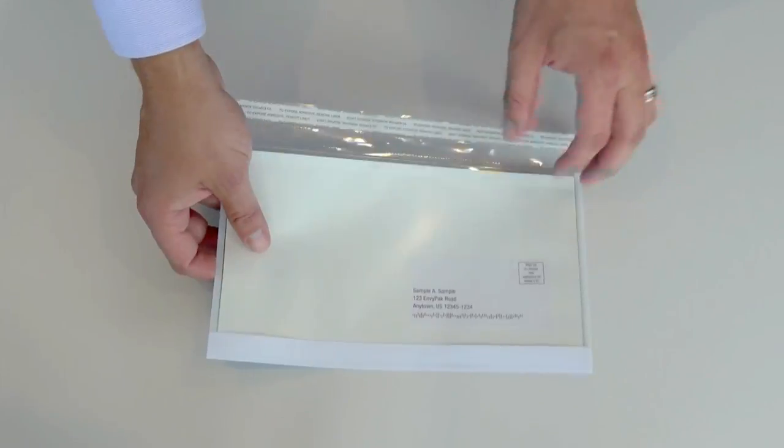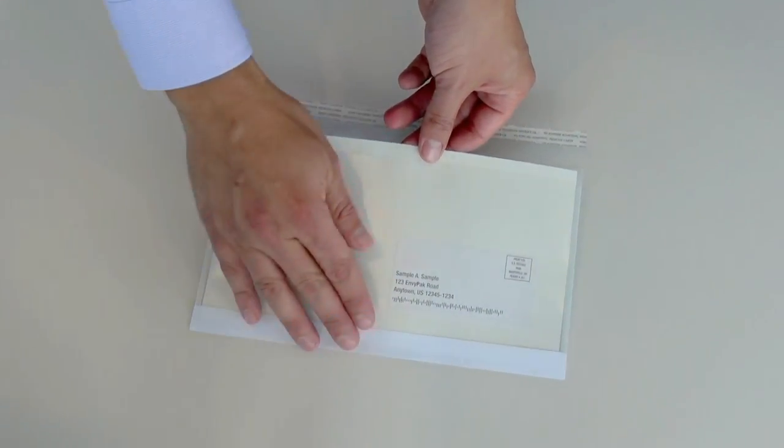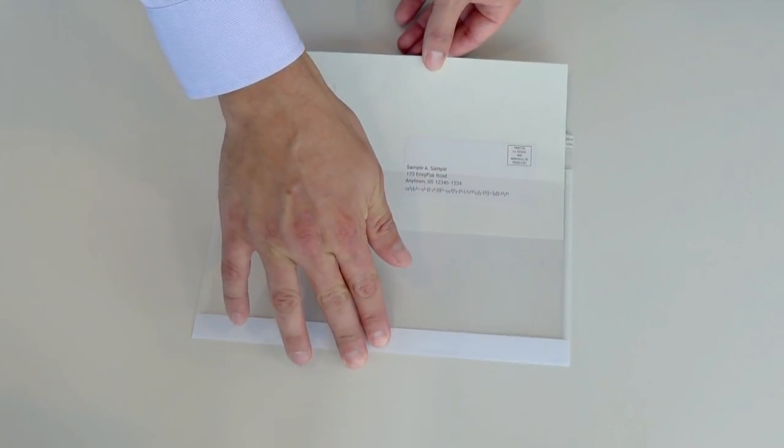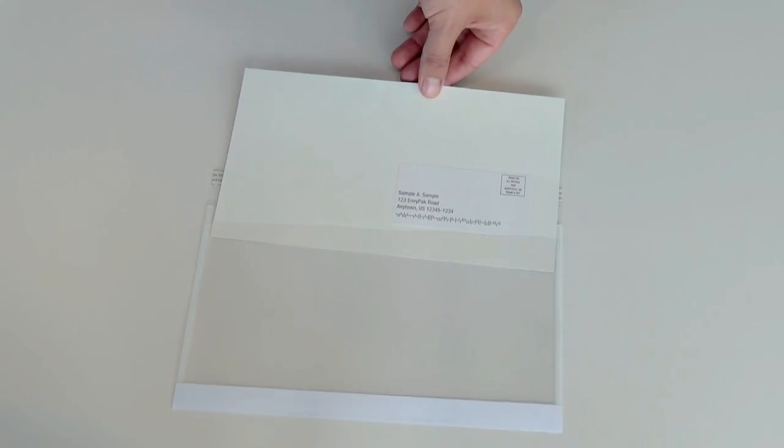Envelopes ship with the paper stock pre-affixed. The address can be imaged directly onto your insert and show through this side of our approved poly.